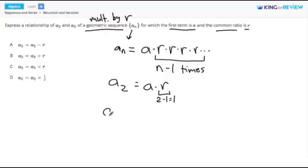The third term, a3, will be a times r times another r. This time we have the third term, so we have to multiply by r 2 times.